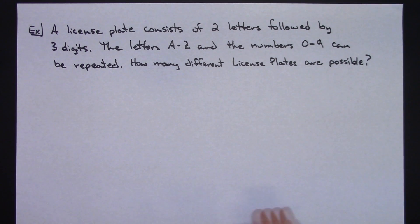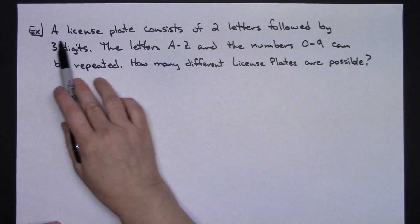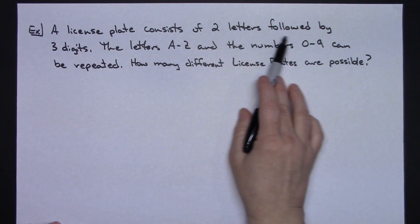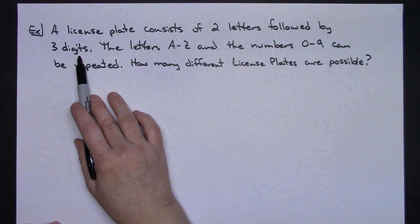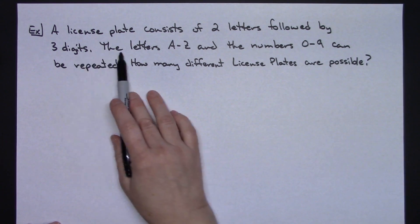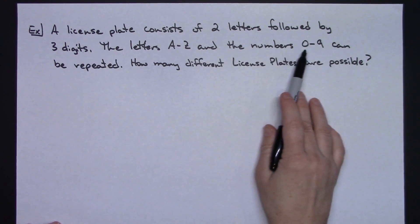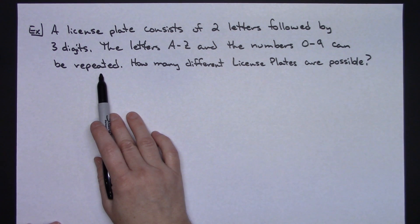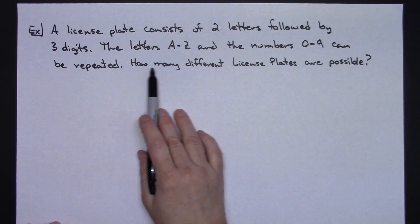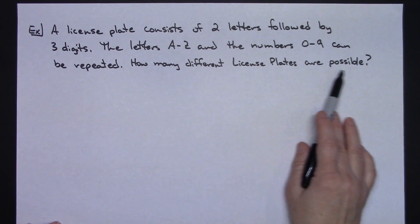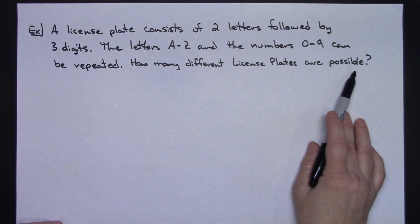Now let's take a look at a second example. A license plate consists of two letters followed by three digits. The letters A through Z and the numbers zero through nine can be repeated. How many different license plates are possible?